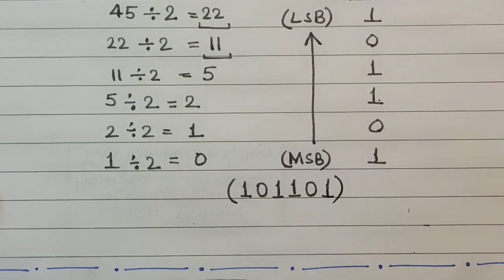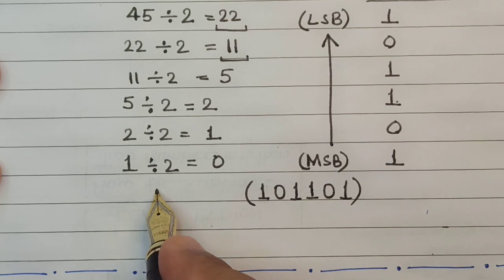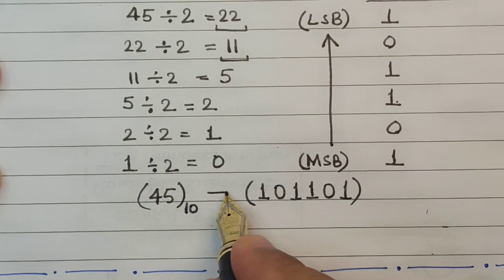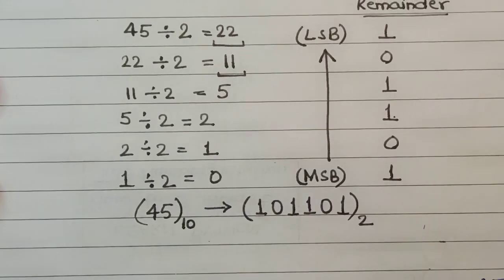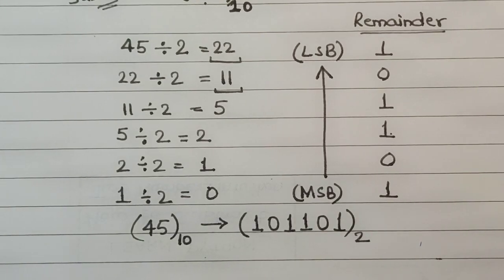So in these three or four steps we have successfully converted 45, which was in the decimal format, into its binary equivalent. So this my friend is the final answer on how to convert a decimal number into its binary equivalent using the most simplest method.